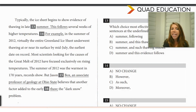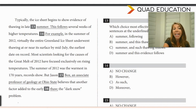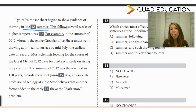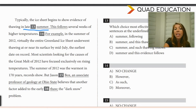So in the first sentence, we find out that typically the ice sheet thaws in late summer. And in the next sentence, after the transition word, we found out that in the summer of 2012, the ice sheet underwent thawing by mid-July, the earliest date on record.